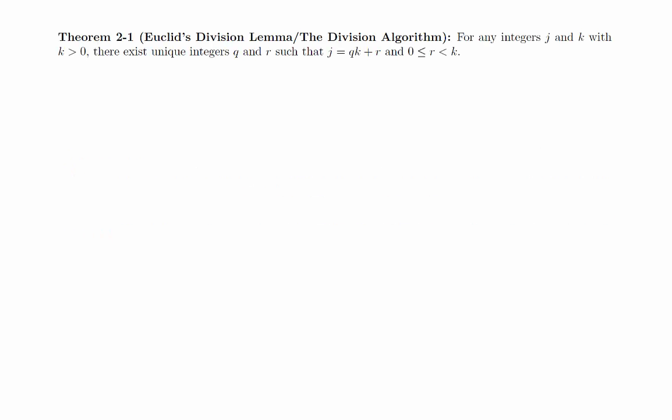For any integers j and k with k greater than 0, there exist unique integers q and r, such that j equals q times k plus r, and 0 is less than or equal to r is less than k.